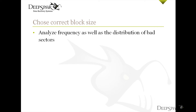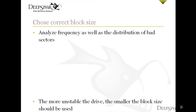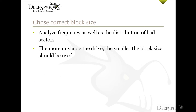When choosing the block size, we have to be mindful of the frequency as well as the distribution of bad sectors. Our goal is to reduce the total number of failed read attempts during the imaging job and to increase the amount of data being recovered. Generally speaking, the more unstable the drive, the smaller the block size that we will want to use with it.